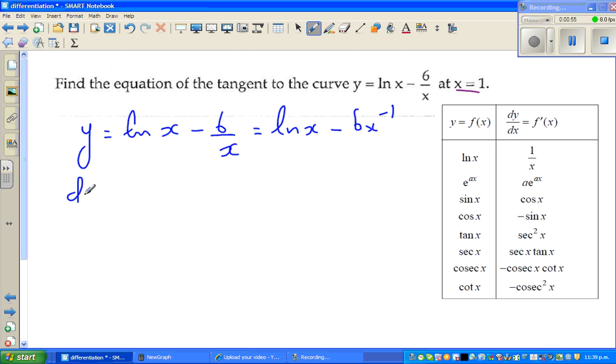So now differentiating with respect to x, dy by dx of y and natural log of x differentiates to 1 over x. And here this is a power function, so you drop the power, so that will become plus 6x to the power, and decrease the power by 1, negative 2.